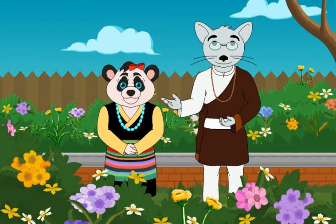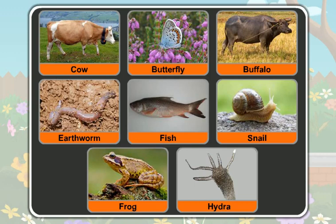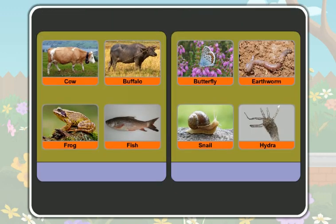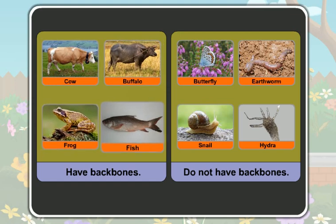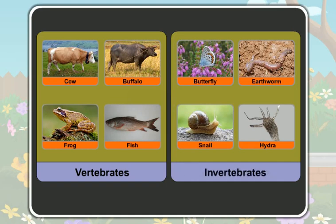There are many animals around us. Some of these animals have backbones in their bodies, while others do not have backbones in their bodies. The animals which have backbones in their bodies are called vertebrates, while the animals which do not have backbones in their bodies are called invertebrates.